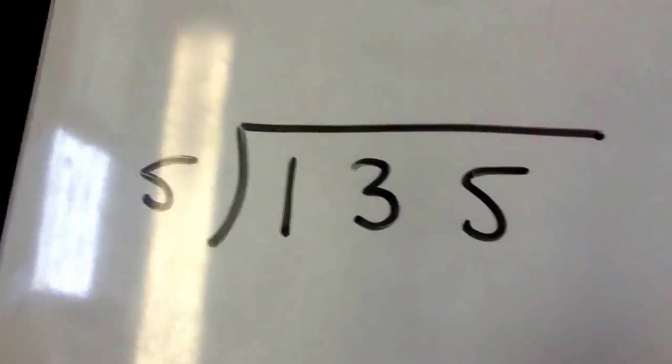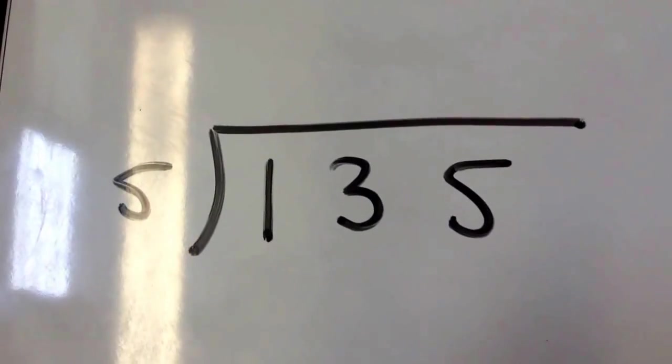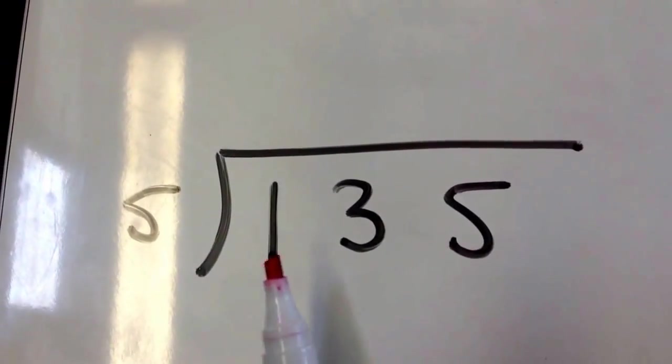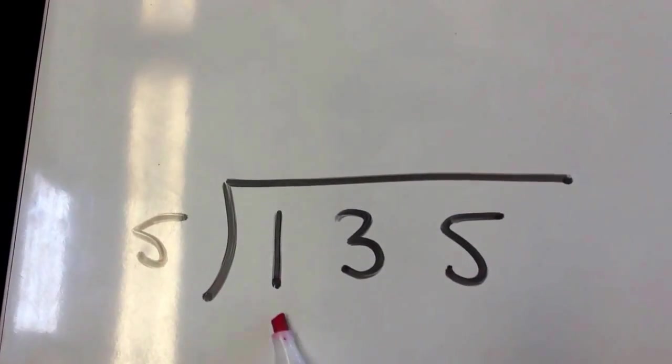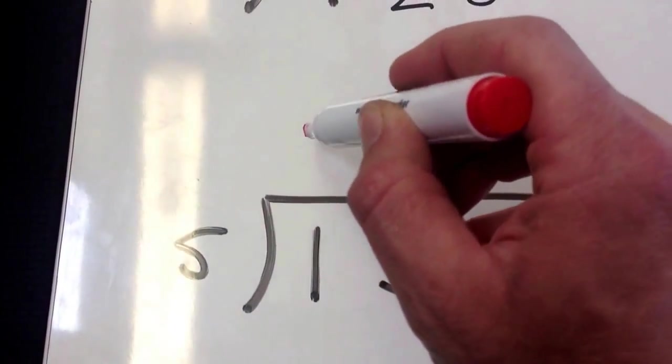Right, last example in this video. Same as before. We take the first value, which is 1. How many times does 5 go into 1? Well, we can't. It doesn't work. So we put a 0 there.